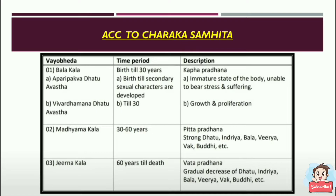From that point till 30 years of age it is called Vivardhamana Dhatu Avastha, during which growth and proliferation takes place. The second classification is from 30 to 60 years, called Madhyamakala, and it is Pitta Pradhana, during which strong Dhatu, Indriya, Bala, Virya, Vak, and Buddhi all start developing.